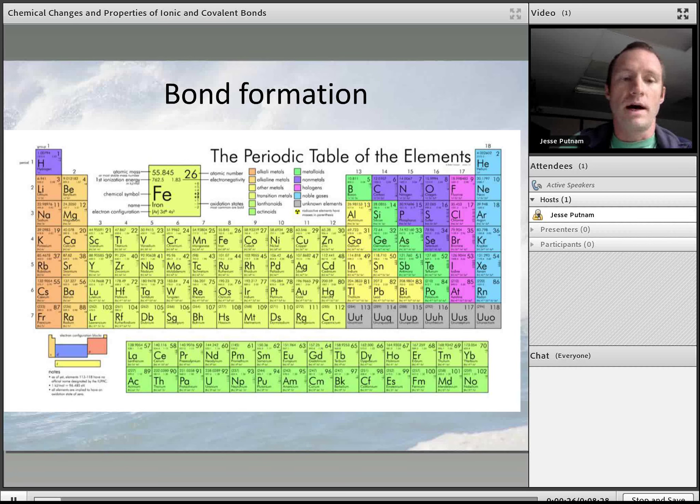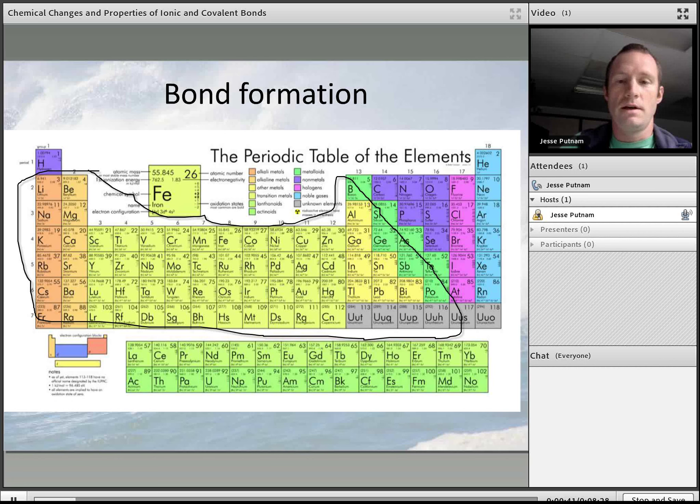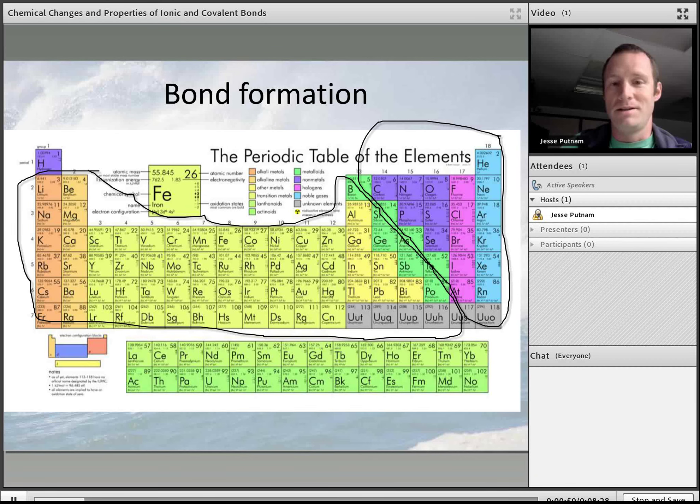Ionic substances are always formed between a metal, something on this side of the periodic table - the line dividing those is right there, these are all the metals - with a nonmetal. So an ionic substance is going to be a very greedy nonmetal that's greedy for electrons, combining with a metal which tends to give up its electrons more easily.